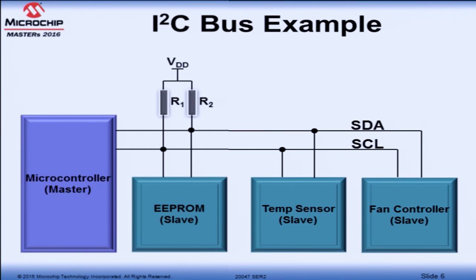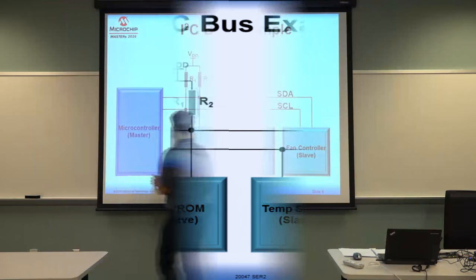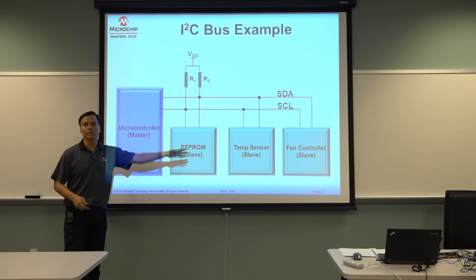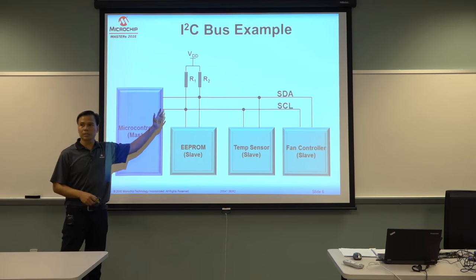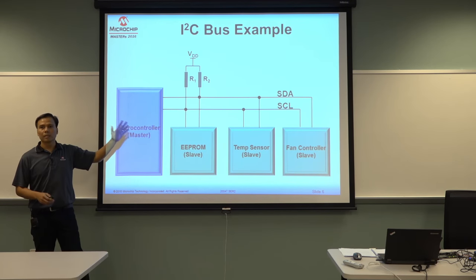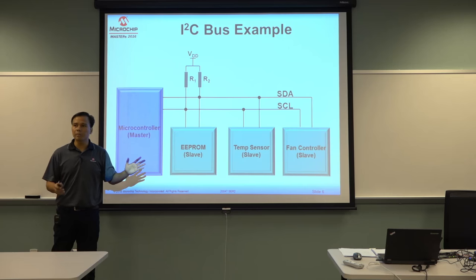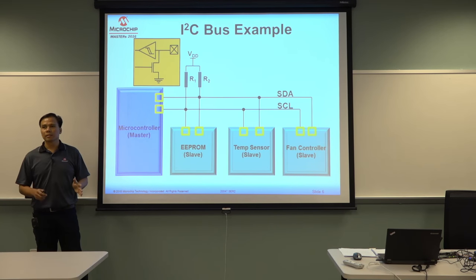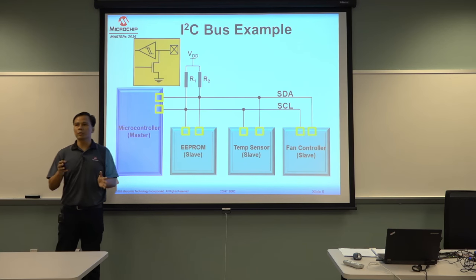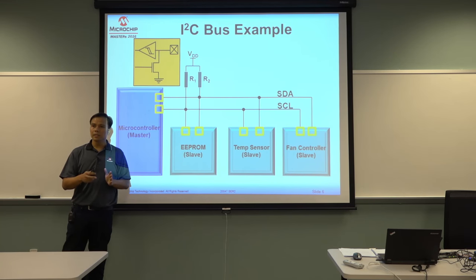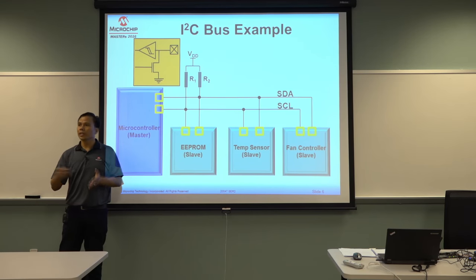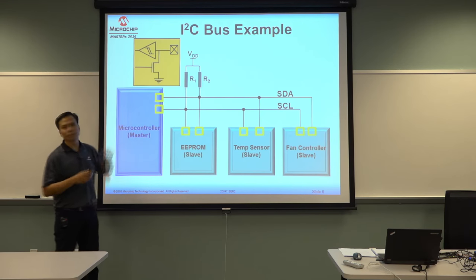This is an example of devices connected via the I2C bus. You have the microcontroller as your master and three slaves: the EEPROM, temp sensor, and fan controller. Note that R1 and R2, the pull-up resistors, are required because I2C works on the premise that the pins are open drain. Open drain means if you want to assert a zero on the bus, you pull the pin down. If you want to assert a one, you leave it open or tri-state the pin, and it will be one because of the pull-up resistors.